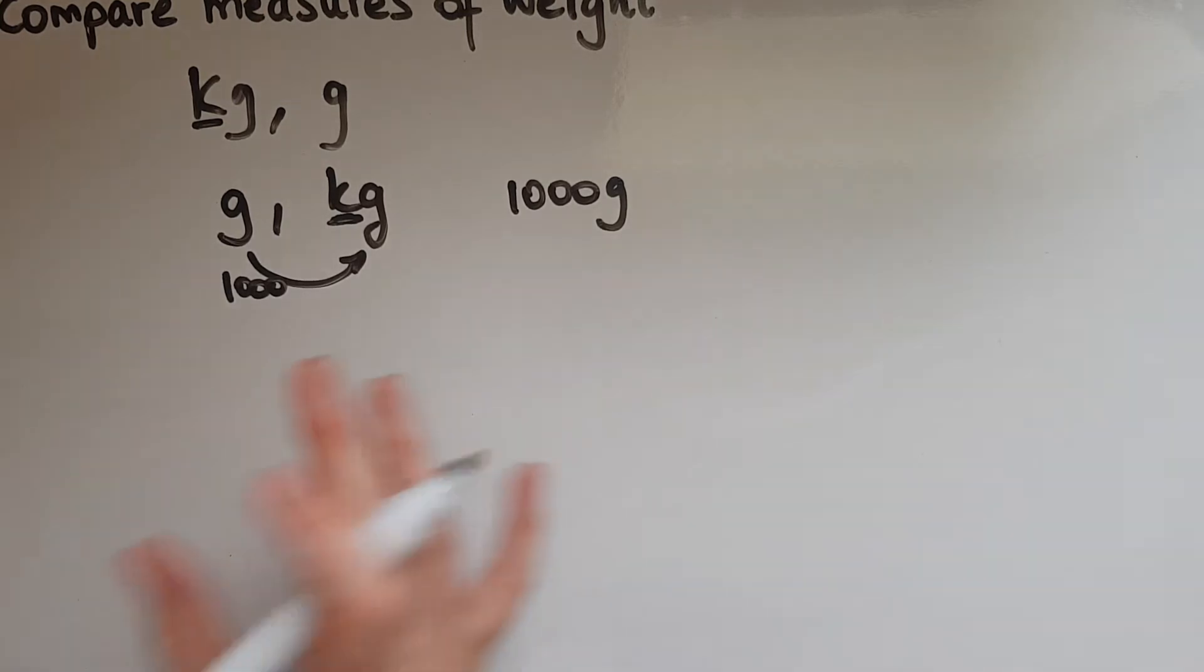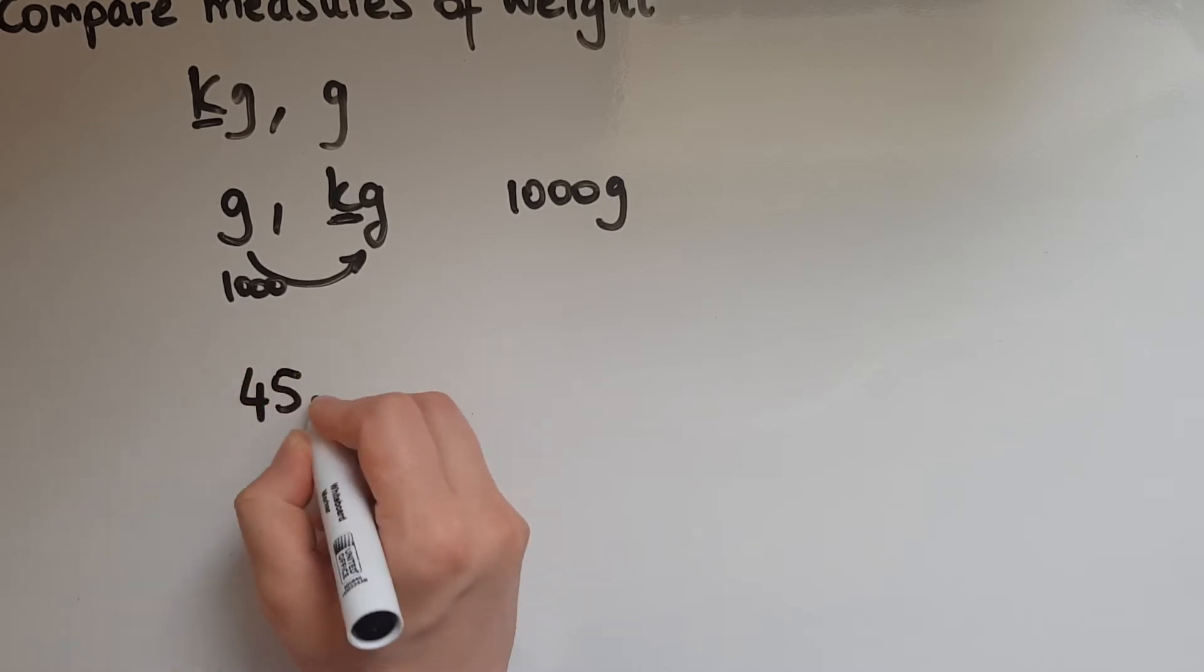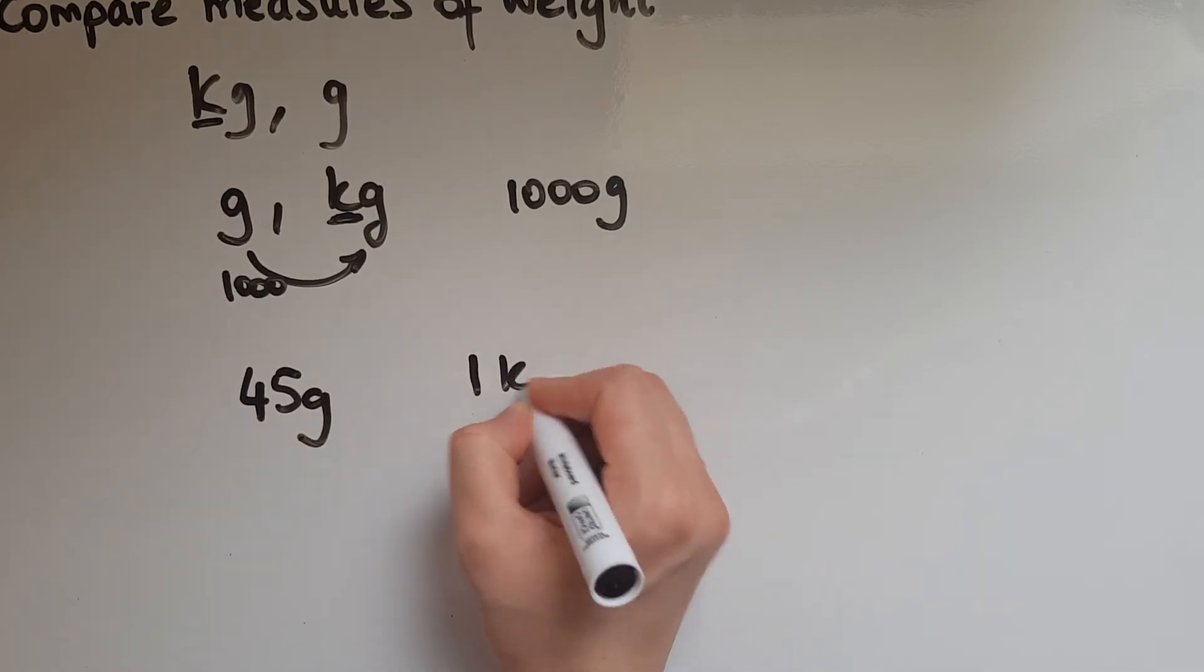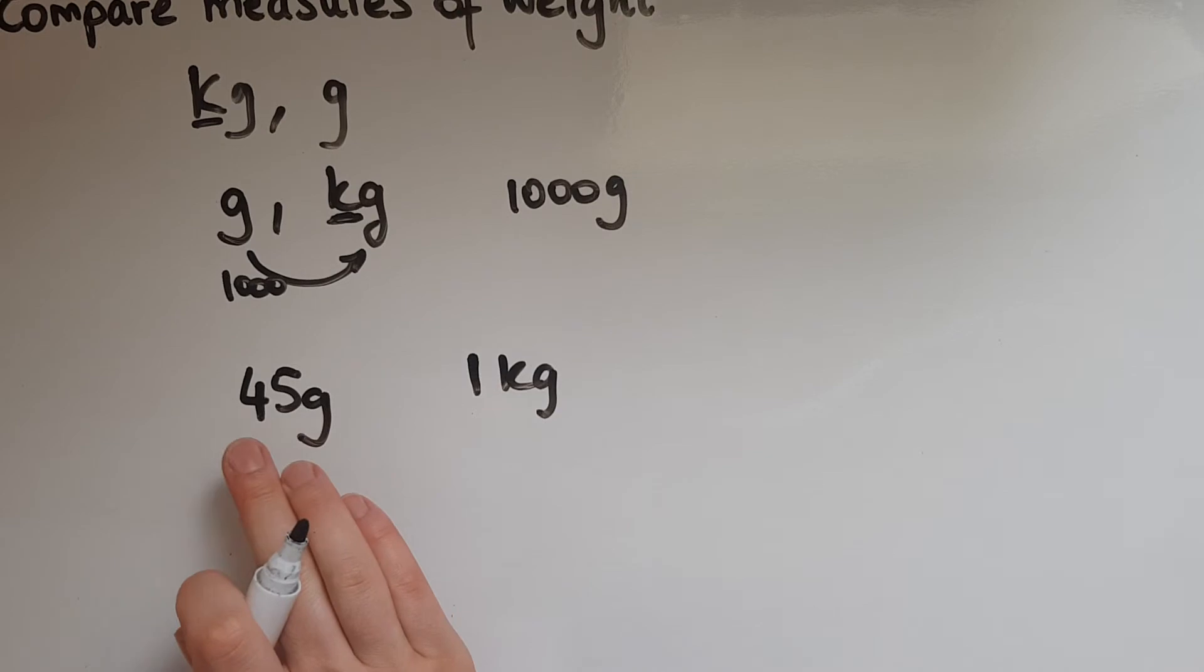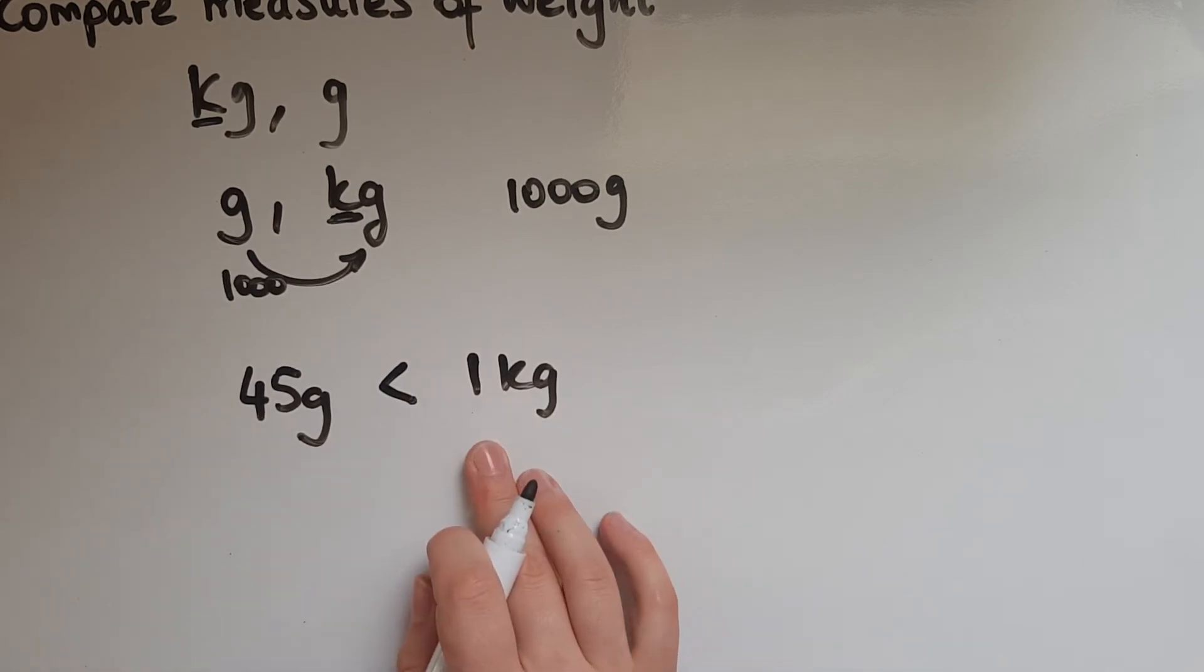So we'll try and compare two different measures now. Let's say if I weigh something and it is 45 grams - is that bigger or smaller than one kilogram? We need a thousand grams to make a kilogram, and this is much less than that, so 45 grams is smaller than one kilogram.